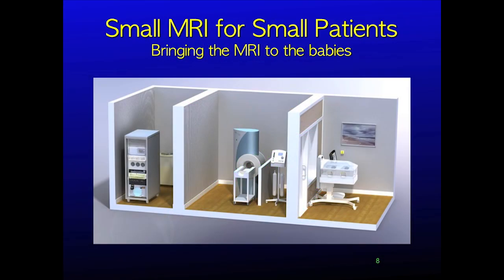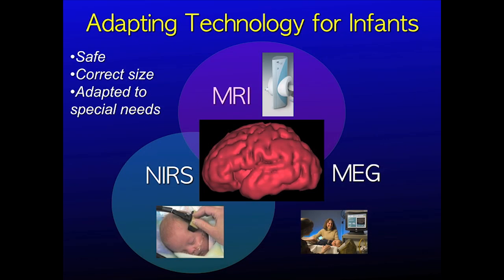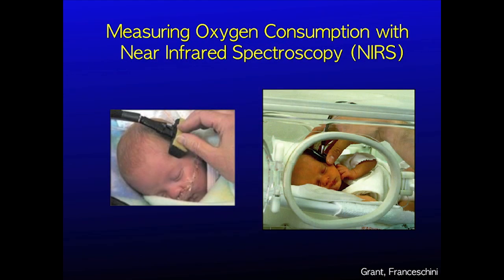To help our young patients, we need to get these scanners as close as possible to the babies. We are currently pioneering a baby-sized MRI that will go in the neonatal intensive care unit. The other two modalities we are developing are near-infrared spectroscopy and magnetoencephalography. Near-infrared spectroscopy is totally safe like ultrasound and can be performed right at the bedside. It provides us with information about cerebral oxygen consumption. Since oxygen is a primary fuel for neurons, this gives us information on regional brain neural activity and neural health.